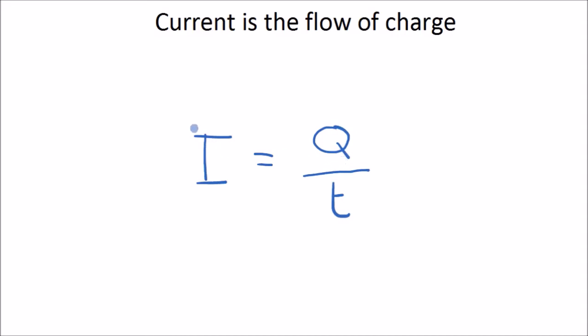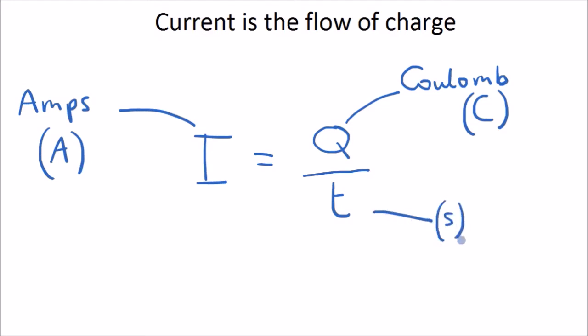So current, symbol is I, is equal to the charge divided by time, so it's the rate of flow of charge. Current is measured in amps, and the unit we just write capital A. The unit of charge is called the coulomb, and capital C is how we write the unit there. Time is seconds, so it's just small s.